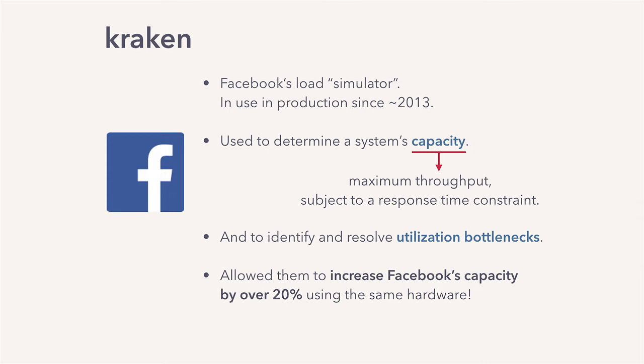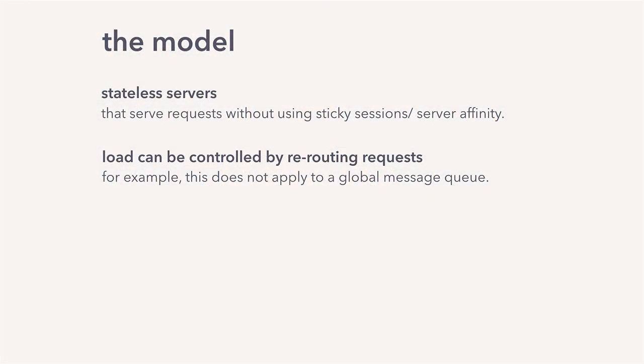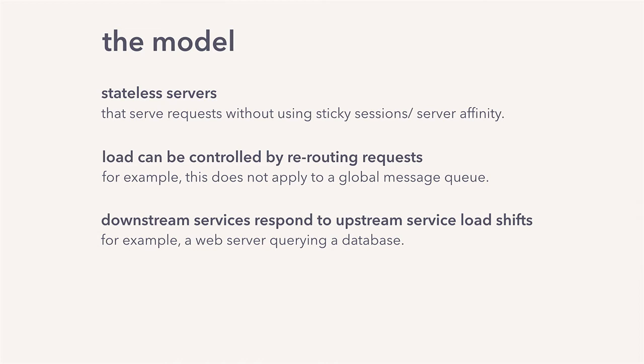Let's look at how Kraken works. First, the model of system Kraken is designed for. Kraken assumes stateless servers — no web sockets, no server affinity. They also assume that load can be controlled by rerouting requests to the system under test, and that downstream services respond to upstream service load shifts. For example, if you have a web server querying a database and the database hits a bottleneck — some sort of resource saturation — you expect that to be reflected in the web server; you expect to see its throughput drop.